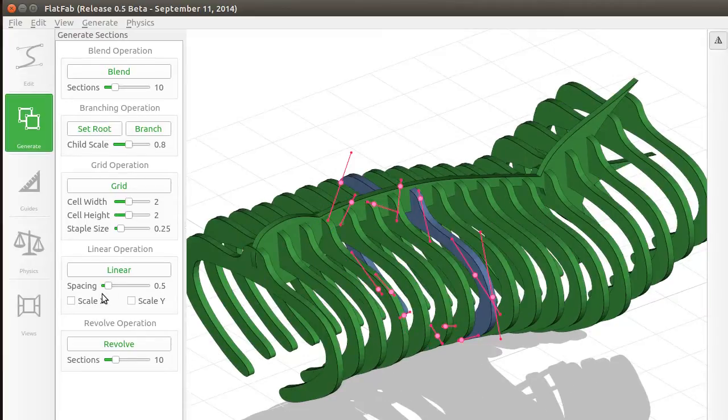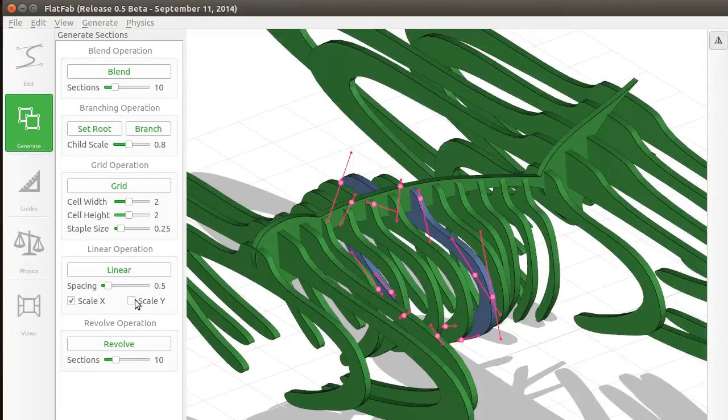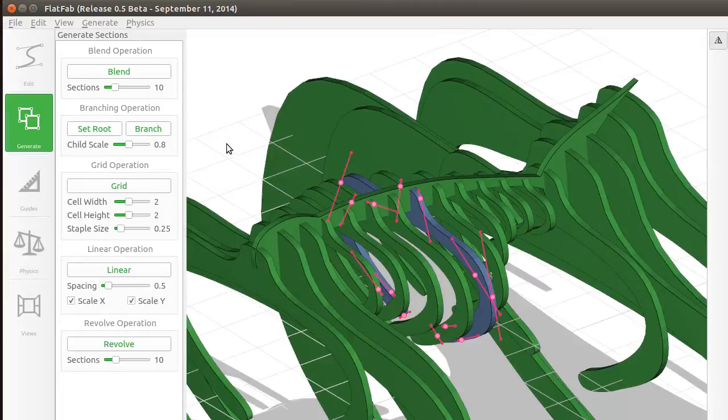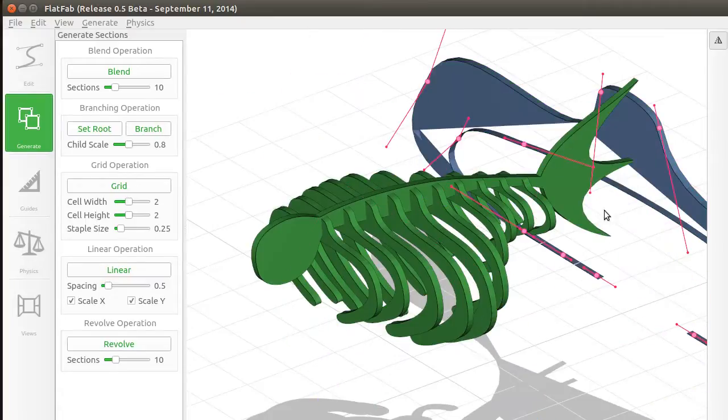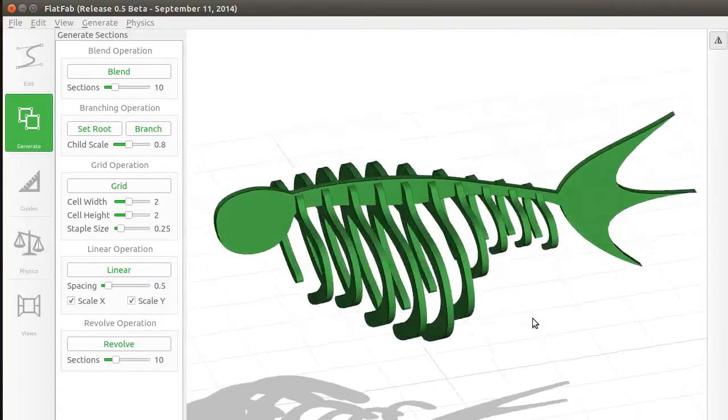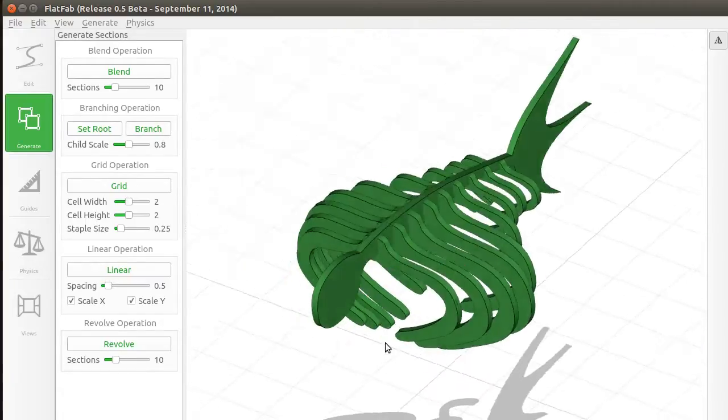In addition, the user may scale generated sections based on the length of each cross-section of the base planar section. Here the base planar section is the spine of the fish. This leads to aesthetically pleasing variation, and in this case lets us quickly create the rib cage for our fish.